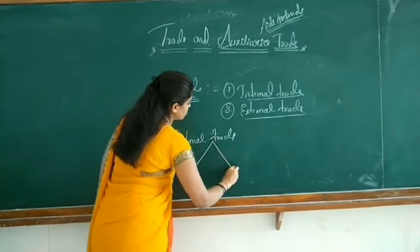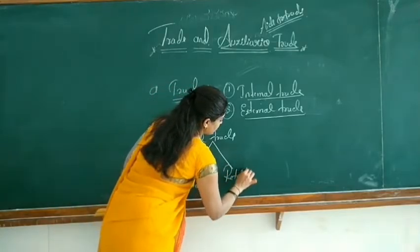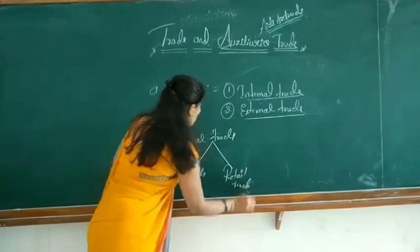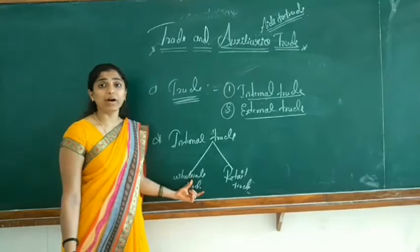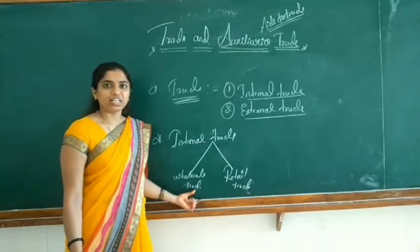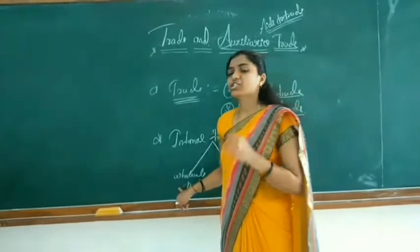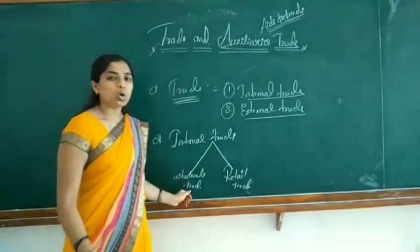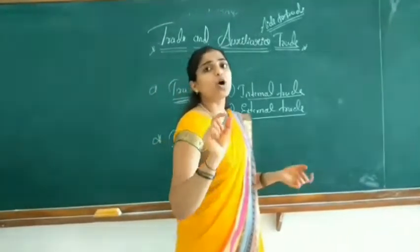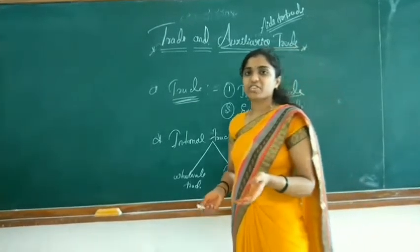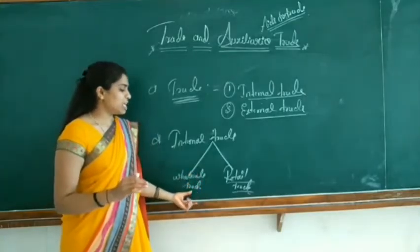One is wholesale trade and another one is retail trade. Wholesale trade means — the word itself suggests — buying and selling of goods and services in large quantity or in bulk. That type of trading is called wholesale trade. Any trade conducted in a small quantity — buying or selling goods and services in smaller quantity — is called retail trade. This is the distinction between wholesale and retail.